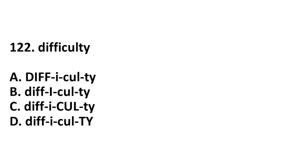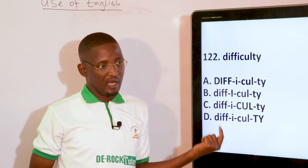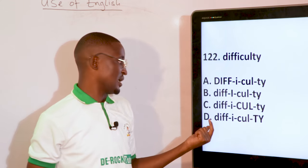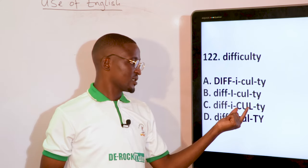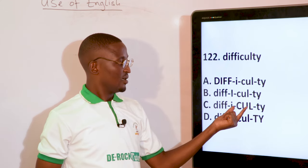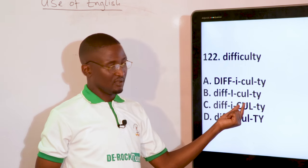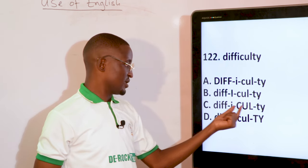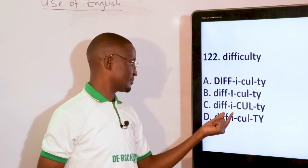DIFFICULTY — the TY ending rule applies most times, not in all cases. DIFFICULTY — the stress falls on C-U-L, which is the third syllable from the beginning. So DIFFICULTY follows this pattern.